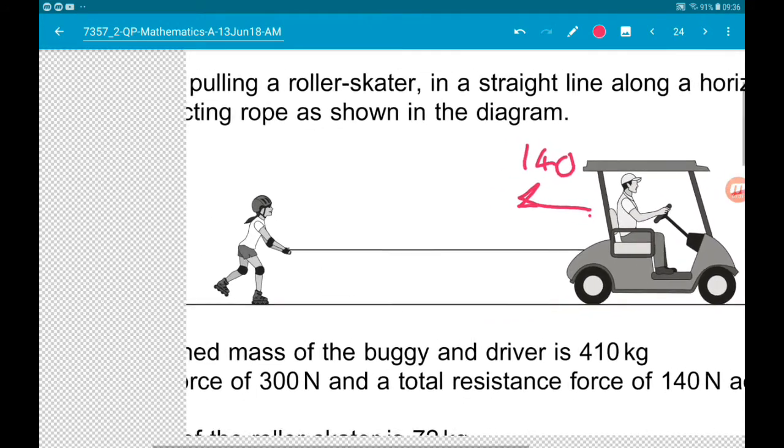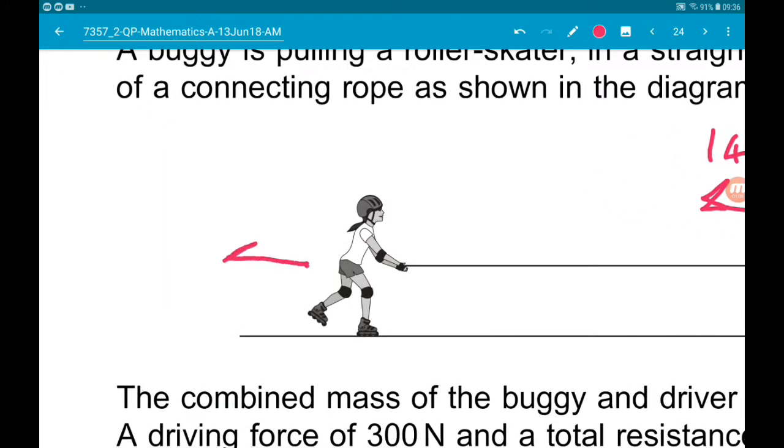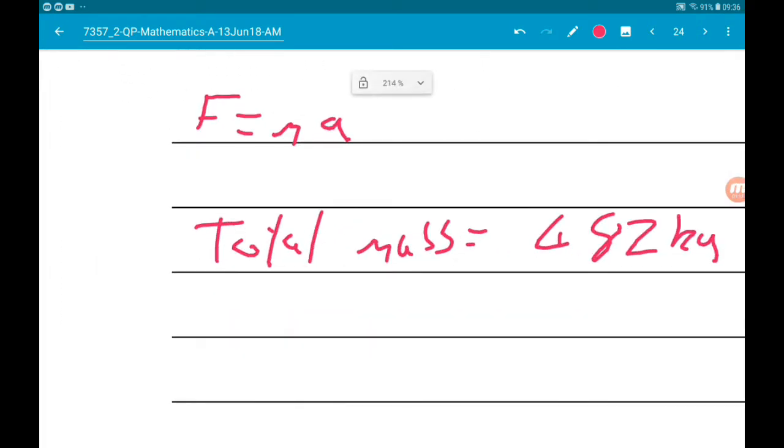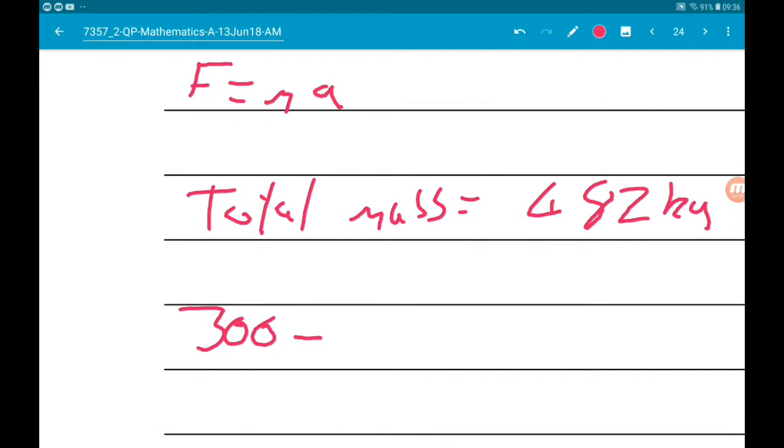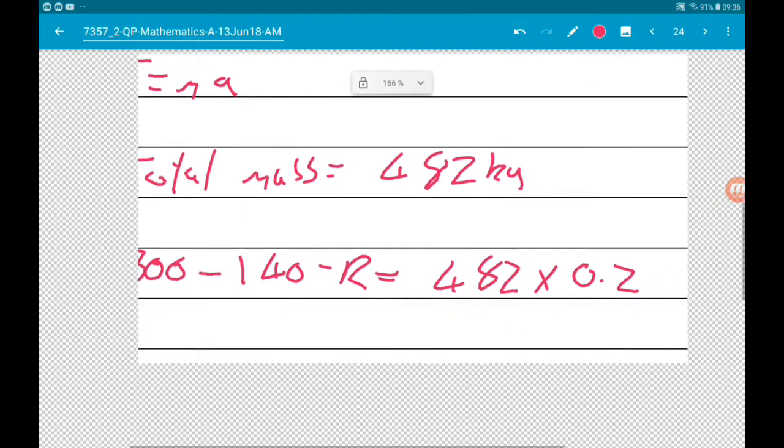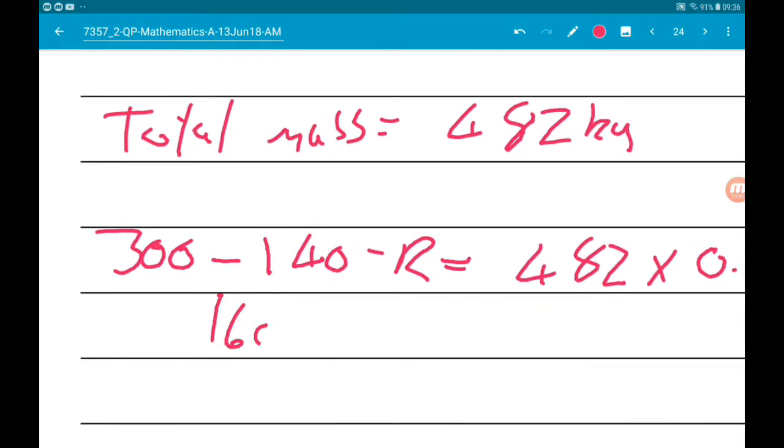Now we know that there is a driving force of 300 newtons. We know there's a resistance force of 140 newtons. We know that the roller skater experiences a resistance force of R newtons. So we can say that the driving force, so 300, minus the two resistant forces, so minus 140 minus R, is equal to the mass times the acceleration, 0.2.